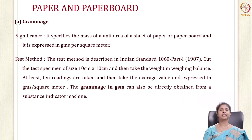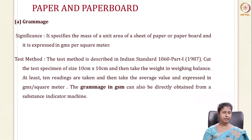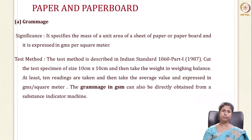Once you have conditioned your paper and plastic, we go into all the tests done for paper and paperboards. The first and most important is grammage. Grammage simply means the weight per unit area — the mass of the paper or paperboard per unit area — and it's expressed as GSM, which stands for grams per square meter.